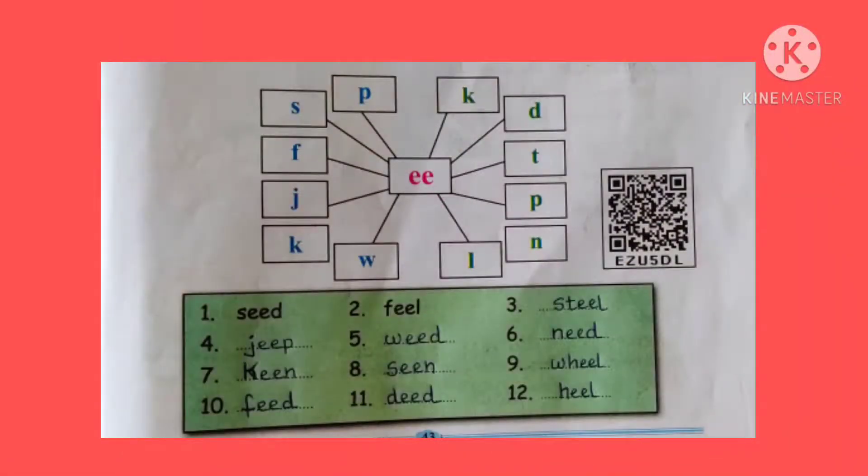S-E-E-D seed and F-E-E-L feel is already done for you. Now, we will make some more new words. S-T-E-E-L, steel. J-E-E-P, jeep. W-E-E-D, weed. N-E-E-D, need. K-E-E-N, keen.